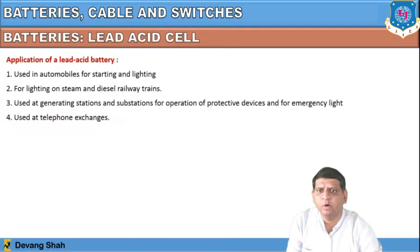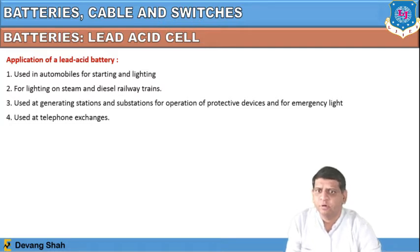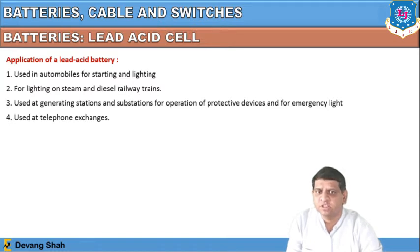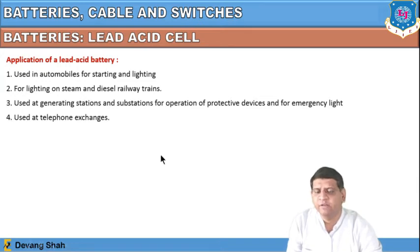Applications of the lead acid battery include: use in automobiles for starting and lighting, for lighting on steam and diesel railway trains, at generating stations and substations for operation of protective devices, for emergency lighting, and at telephone exchanges.